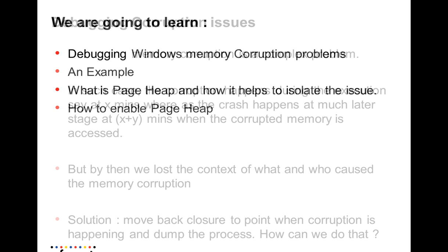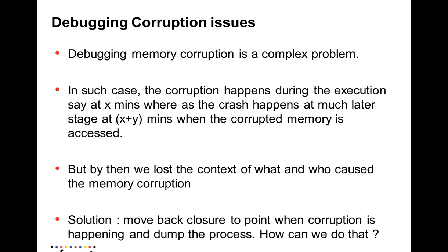Memory corruption issues are a complex problem. The main challenge is that during execution, there is a point at which the corruption happens — say at X minutes — but the crash will not happen immediately. The crash actually happens much later, at X plus Y minutes, when the corrupted memory is accessed by another thread. That leads to the crash and a core file, but the context saved in that core file will have no evidence of what led to the corruption, making it very challenging to find the root cause.